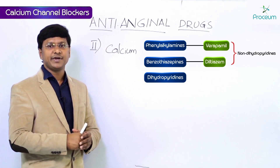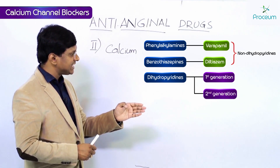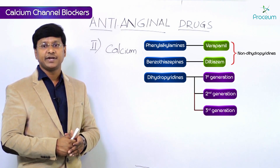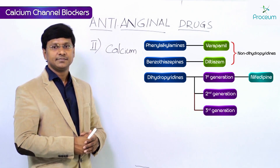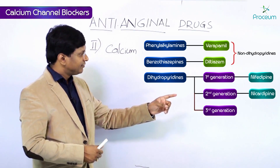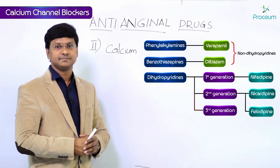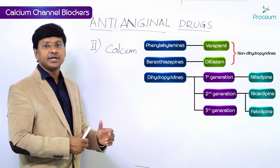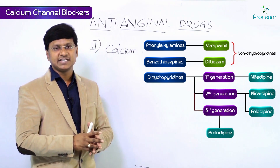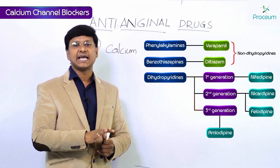Coming to the dihydropyridines, they have three generations. First generation includes nifedipine. Second generation includes nicardipine and amlodipine — wait, second generation includes nicardipine and felodipine, whereas third generation dihydropyridines include amlodipine. This is the classification of calcium channel blockers.